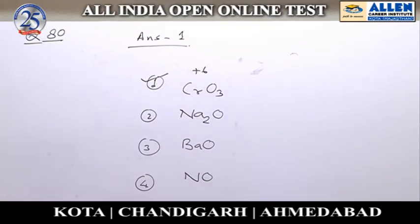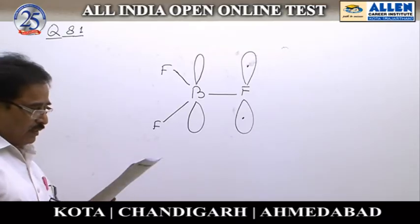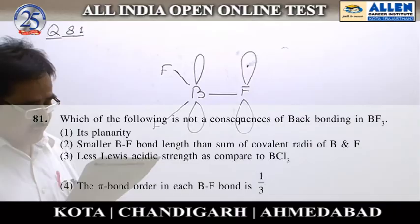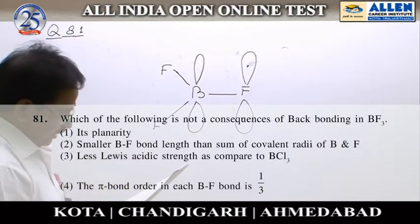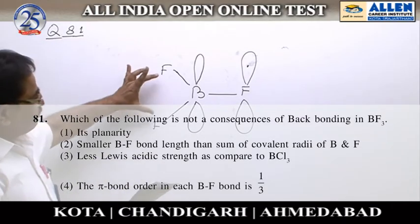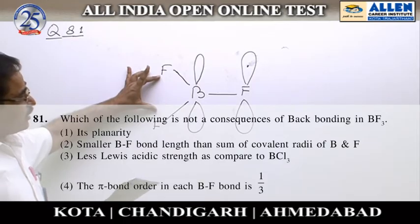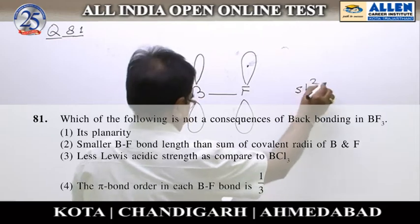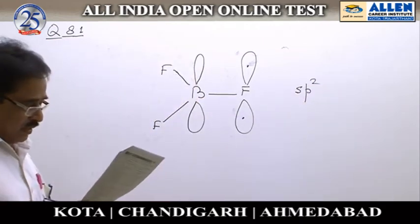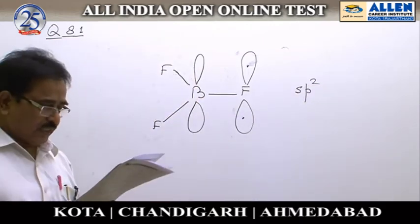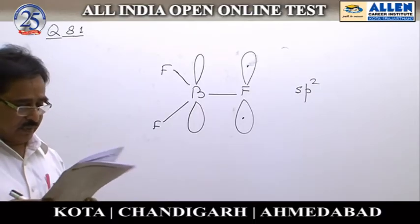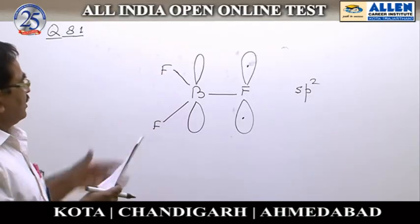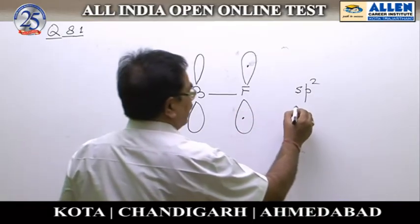Question number 81: Which of the following is NOT a consequence of back bonding in BF3? The structure of BF3 is trigonal planar and its hybridization is SP2. The first option is its planarity — the molecule is planar, but this can be explained by hybridization alone, not by back bonding.